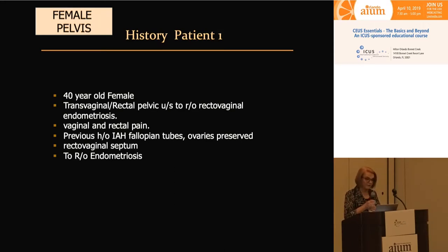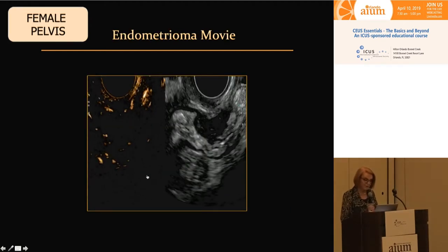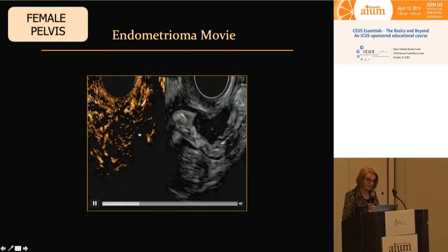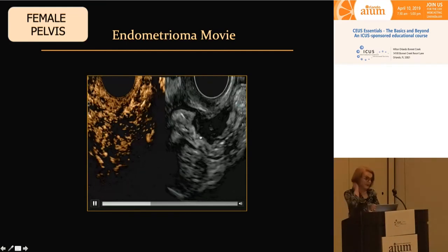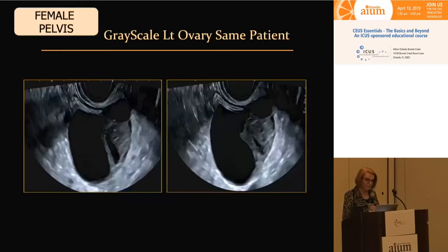Let's look now at the female pelvis. A 40-year-old female has a transvaginal rectal pelvic ultrasound to rule out rectovaginal endometriosis — she has vaginal and rectal pain. On this endovaginal scan, we're looking at her sigmoid colon. We can see the very typical appearance of the en-plaque, very hypoechoic mass lesion related to the bowel wall. When we do contrast enhancement, the bowel is enhancing, and the mass lesion is not avidly enhancing as a carcinoma would be — instead it is relatively hypovascular throughout the arterial phase.